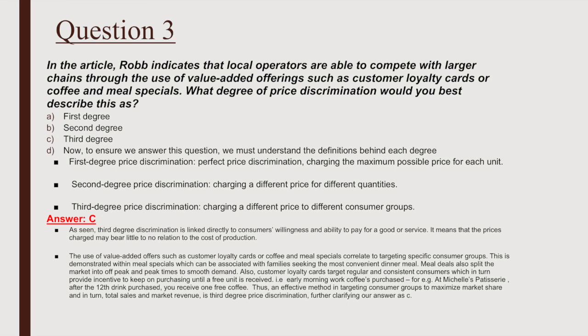Question 3: The article states that local operators are able to compete with larger chains through the use of value-added offerings such as customer loyalty cards or coffee and meal specials. What degree of price discrimination would you best describe this as? A) first degree, B) second degree, C) third degree. To answer, we must understand the definitions: first degree — charging the maximum possible price for each unit; second degree — charging a different price for different quantities; third degree — charging a different price to different consumer groups. The answer is C.